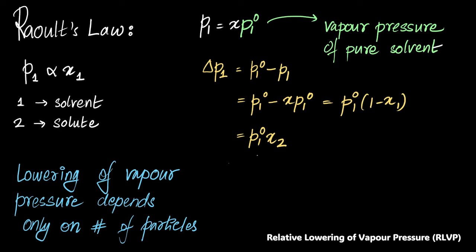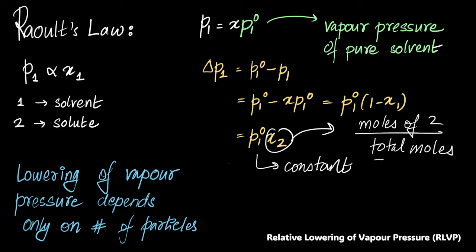Now, out of all of these, look, this is a constant, which depends on temperature. And this is something, what is this? It's a mole fraction, right? It's number of moles of something, moles of 2. Divide by total moles. Look at that. This one looks like it only depends on number of particles. We almost proved this, right? Lowering of vapor pressure depends only on number of particles. But there's a small catch here. What's the catch? Look at this carefully.